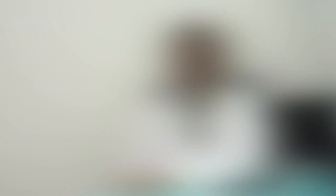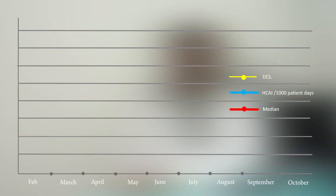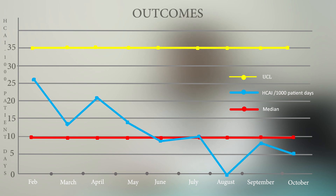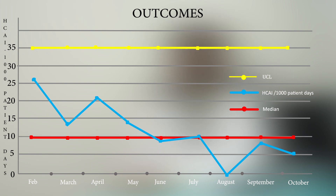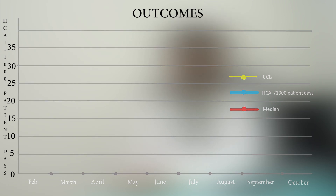This run chart depicts healthcare-associated infection over 9 months in the unit. Healthcare-associated infection reduced from a baseline of 25 per 1,000 patient days to a median of 9.4 per 1,000 patient days, with even a month where there was no infection at all in the unit.